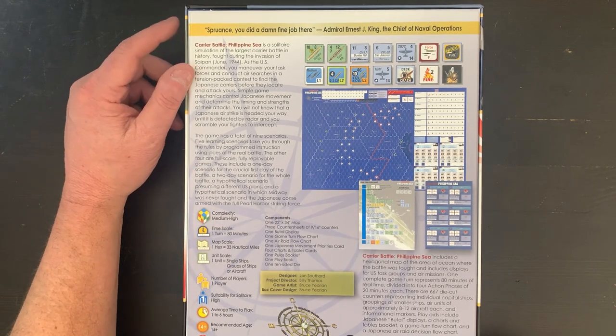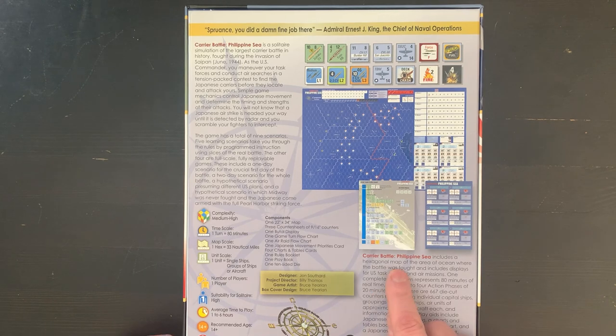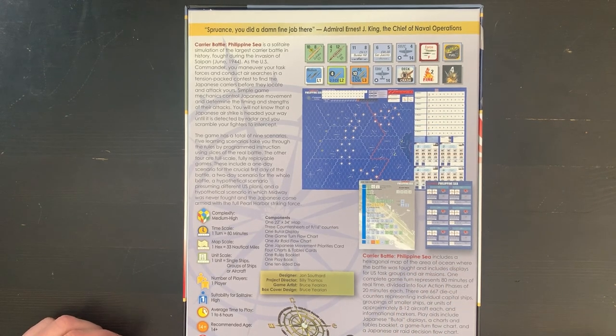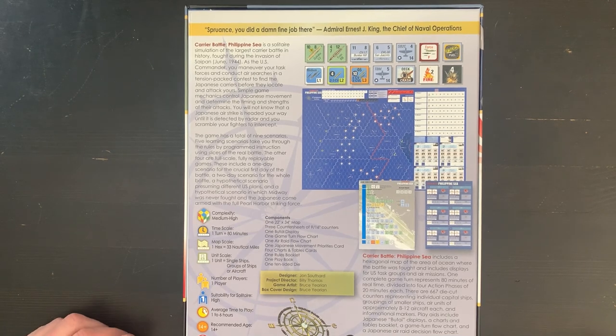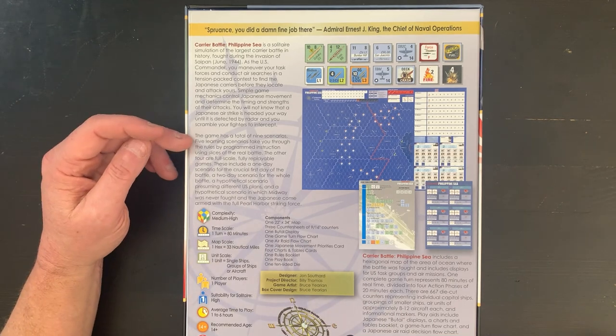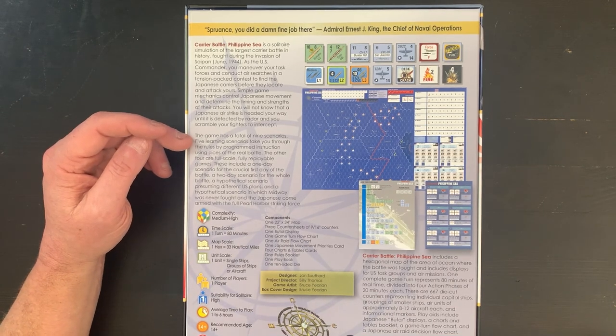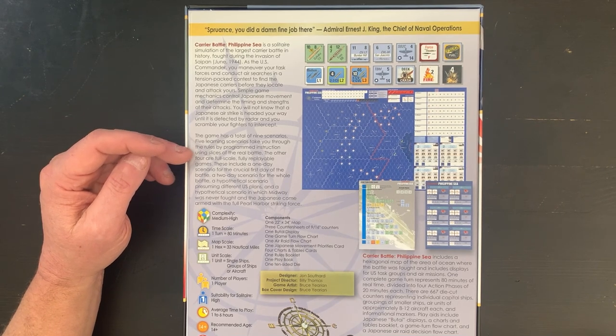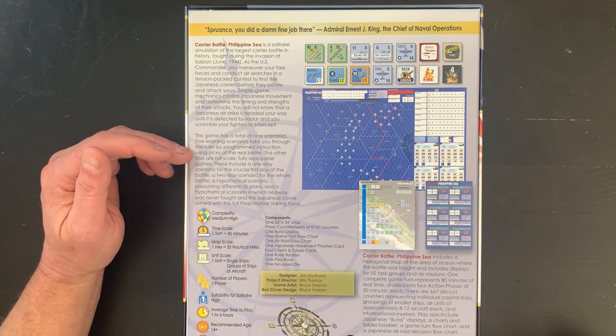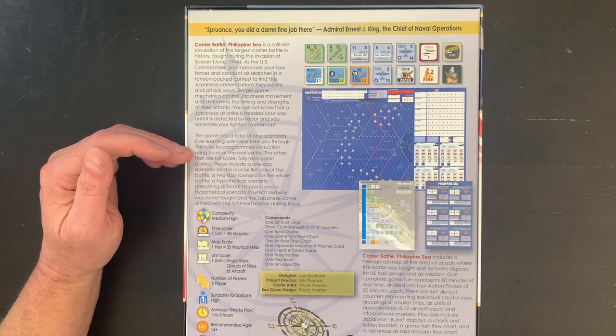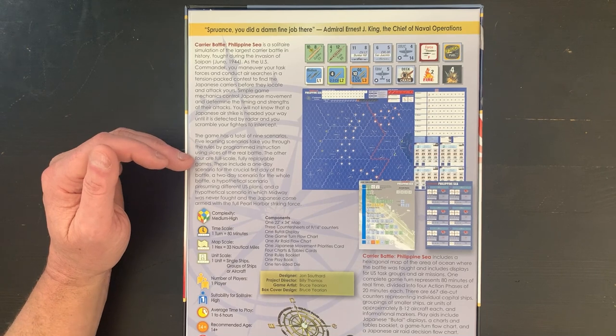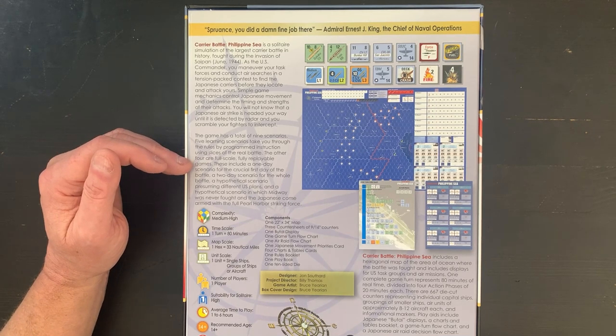So what does this got inside of it? It includes a hexagonal map of the area of the ocean where the battle was fought and includes displays for U.S. task force and air missions. We'll get into the box and see what it has. The game has a total of nine scenarios. Five learning scenarios take you through the rules by programmed instruction. I actually like that. It allows you to learn the game at your own pace.